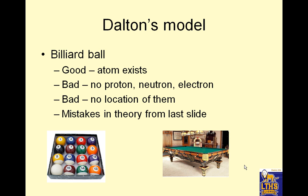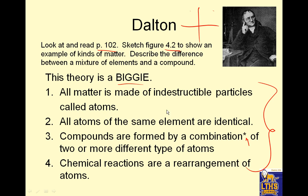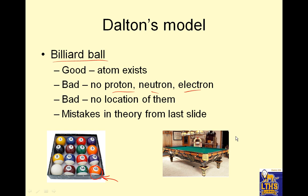So Dalton, based on these postulates, was able to come up with a model — we sometimes refer to it as the billiard ball model, where atoms are solid spheres. It was good because he was able to deduce that atoms exist from data. It was bad because what we know now about atoms was not all included. There was no information about the parts of an atom and where they were. We also know now that you can change atoms nuclearly, and there are different kinds of atoms of the same element called isotopes.